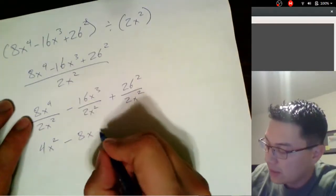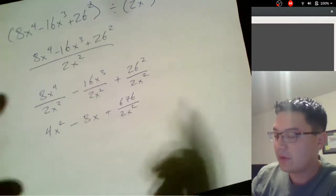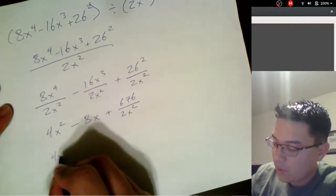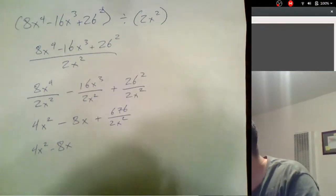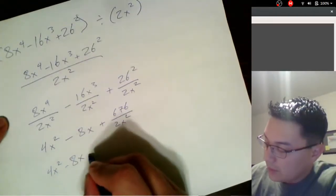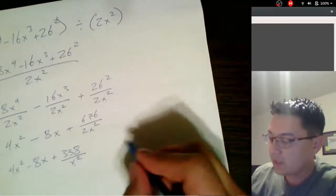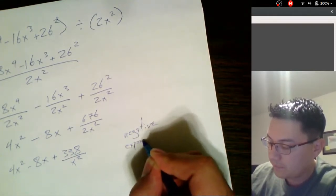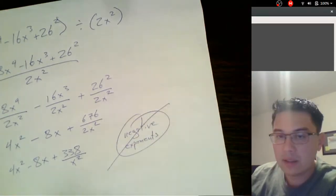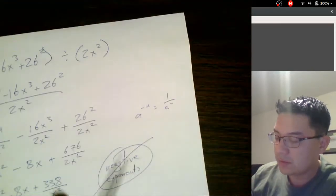Now this is 26 squared — we have to deal with that first before we can really do anything here. Let me grab a calculator real quick. 26 squared is 676. So this will be 676 over 2x². So we'll have 4x² minus 8x, and then 676 divided by 2 comes out to 338 divided by x squared. We don't want negative exponents — negative exponents are bad. Use the negative exponent rule: a to the negative n equals 1 over a to the n. So we'll leave our final answer like this.